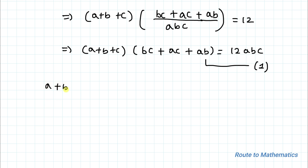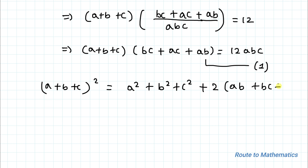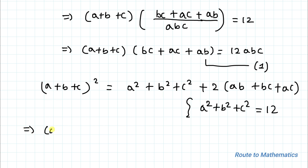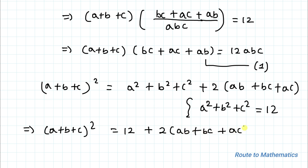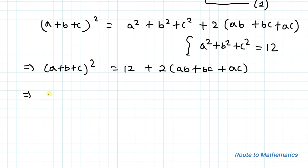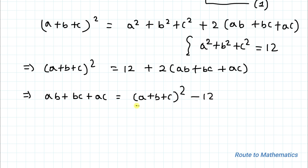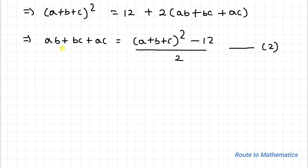We know the algebraic identity: (a+b+c)² = a² + b² + c² + 2(ab + bc + ca). Since a² + b² + c² = 12, substituting gives (a+b+c)² = 12 + 2(ab + bc + ca). Rearranging, ab + bc + ca = [(a+b+c)² − 12] / 2. Let's call this equation 2.